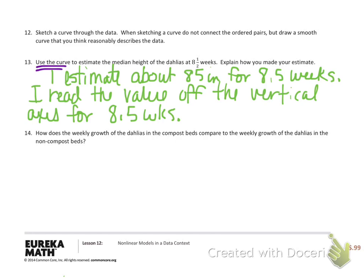Exercise fourteen: how does the weekly growth of the dahlias in the compost beds compare to the non-compost beds? In the non-compost beds, the growth was the same each week for the entire nine weeks. For the compost beds, the growth starts similarly, but after four weeks begins to grow at a faster rate. There's a clear difference attributable to the compost.